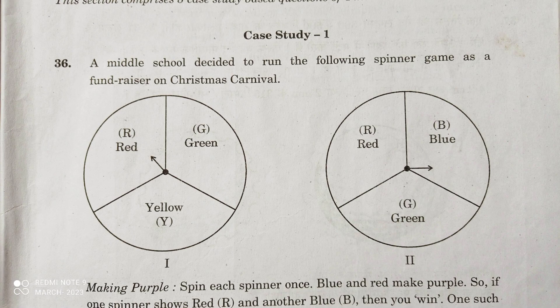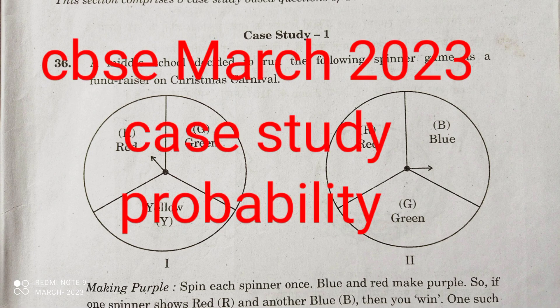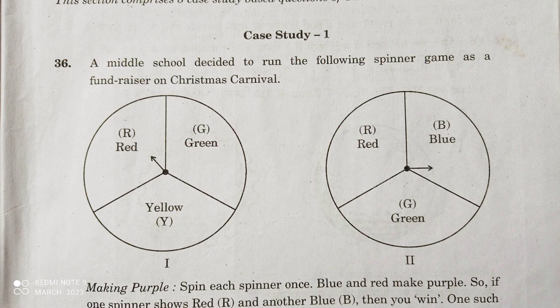Hi viewers. In this video we will discuss the 2023 March CBSE question paper and we will look at a case study question. The question is related to probability. The question is: a middle school decided to run the following spinner game as a fundraiser on Christmas.